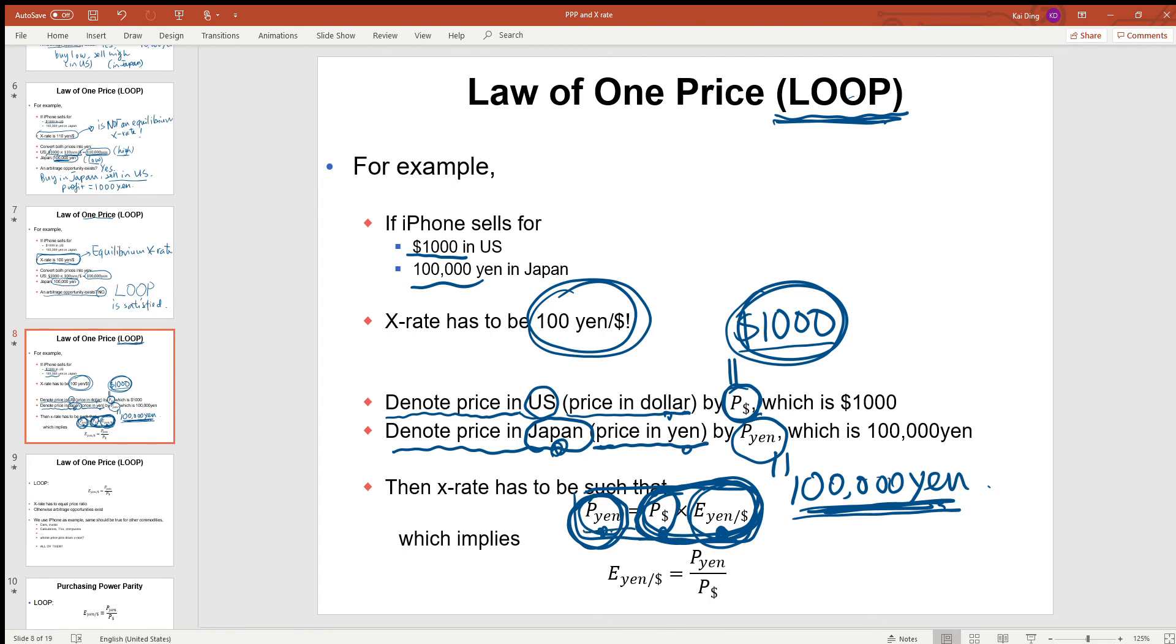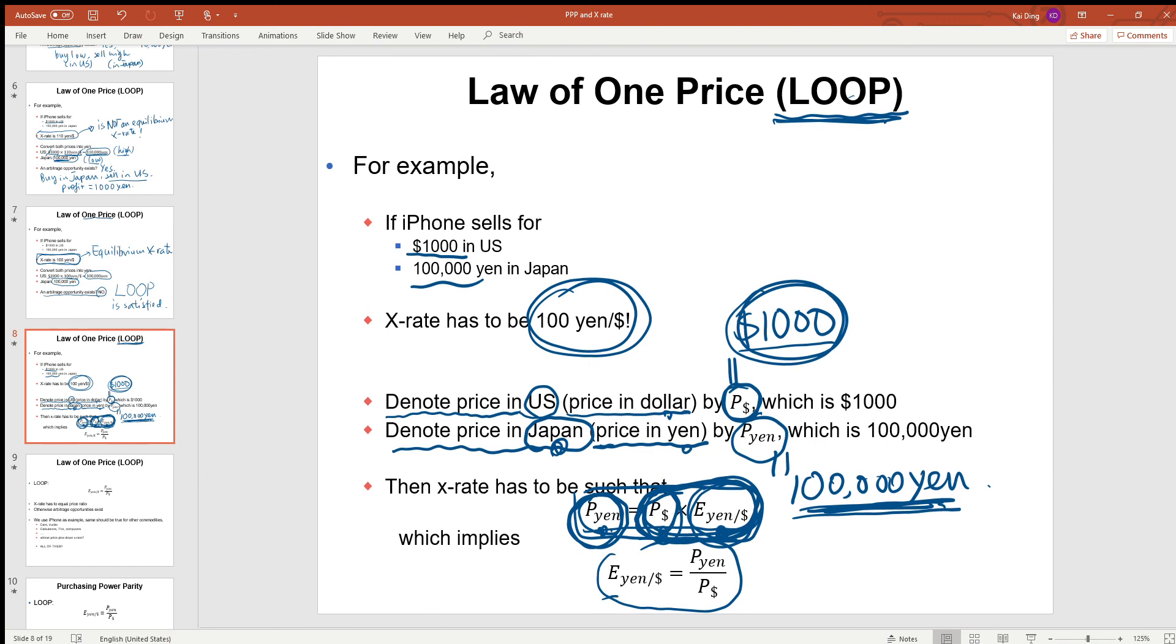We can divide both sides of this equation by PUS or P dollar. The right-hand side divided by P dollar becomes E yen per dollar, and the left-hand side divided by P dollar becomes P yen over P dollar. And this gives us a relationship that relates the exchange rate to the price ratio.